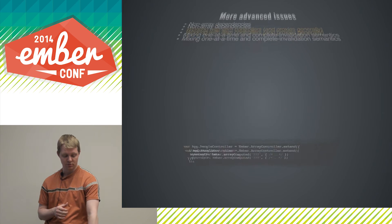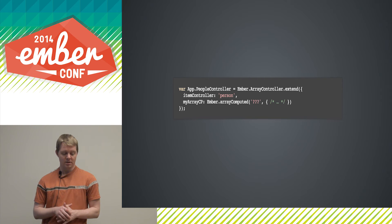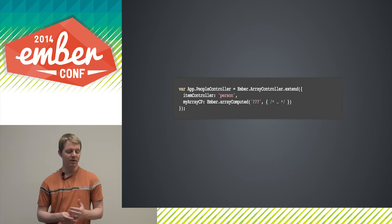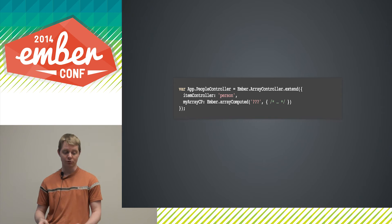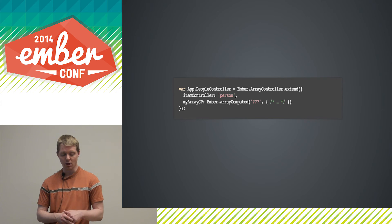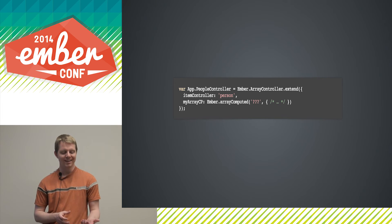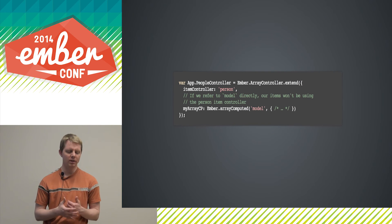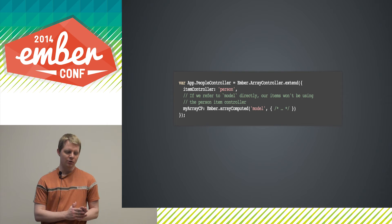Working with item controllers: the most common time is via array controllers. With an array controller, you can specify an item controller, and when you retrieve items from the array, they'll be wrapped in the specified controller. So if we do peopleController.objectAt(3), we won't get the raw record from the model property — we'll get a person controller that proxies to that item. You may wonder what's the right property to put here. You can certainly depend on the model property, but then you won't get your item controllers; you'll just get the raw items.